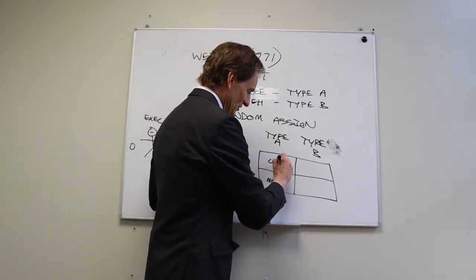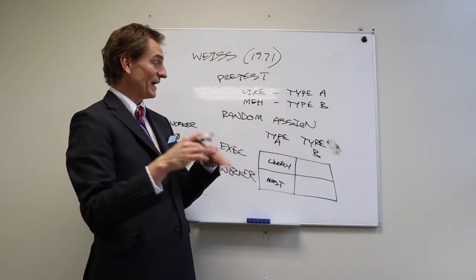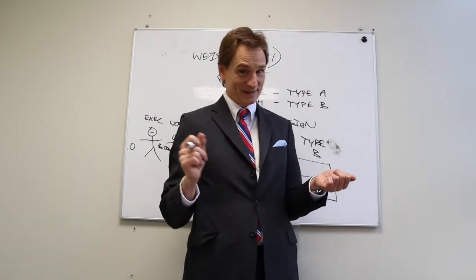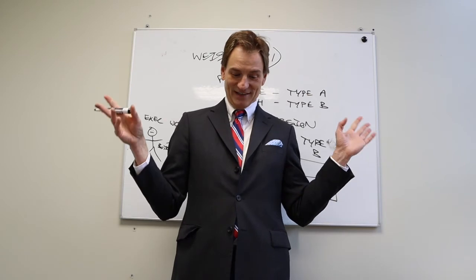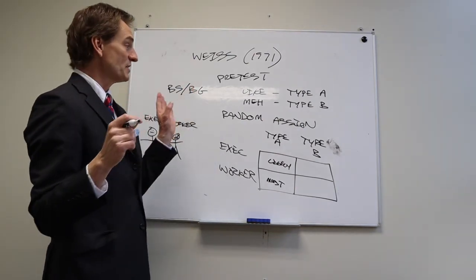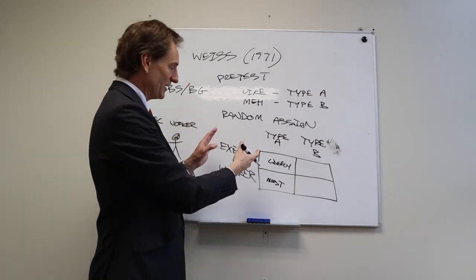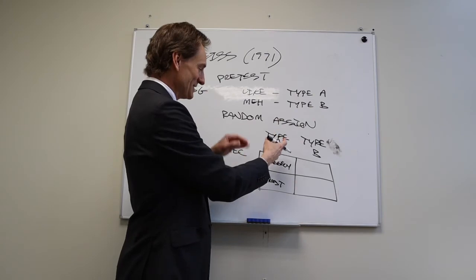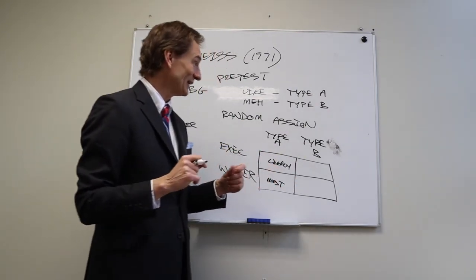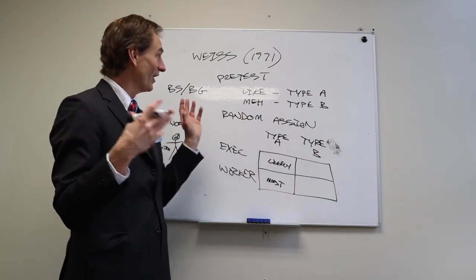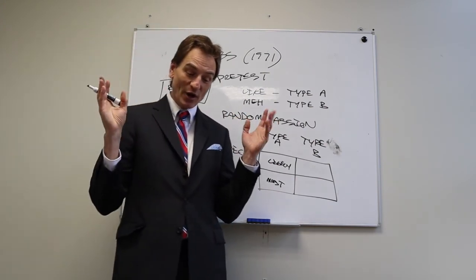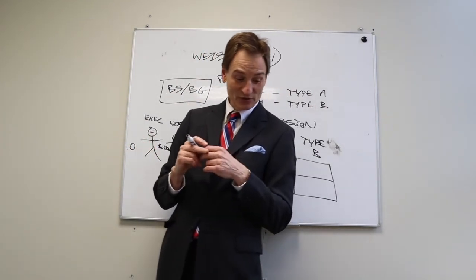The final takeaway from the executive monkey study: is this a within-subjects or between-subjects design? It has to be a between-subjects, between-groups design. You can't have an executive monkey die, then be resurrected and made the worker to see if he dies faster — we lack that technology currently. So we run this as a between-subjects design, which illustrates the one independent variable two-group design.